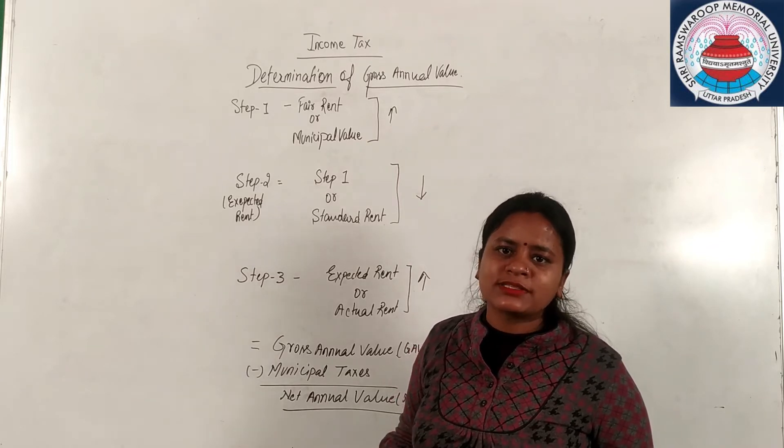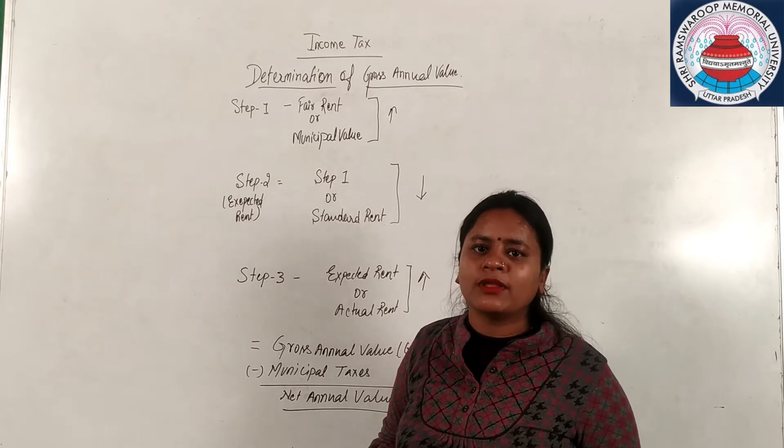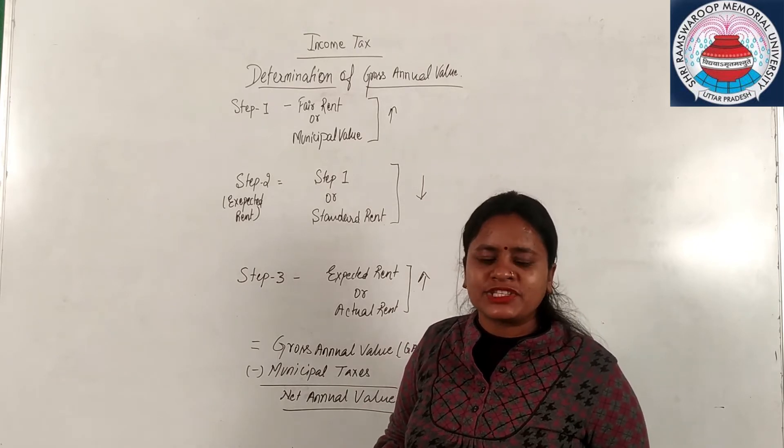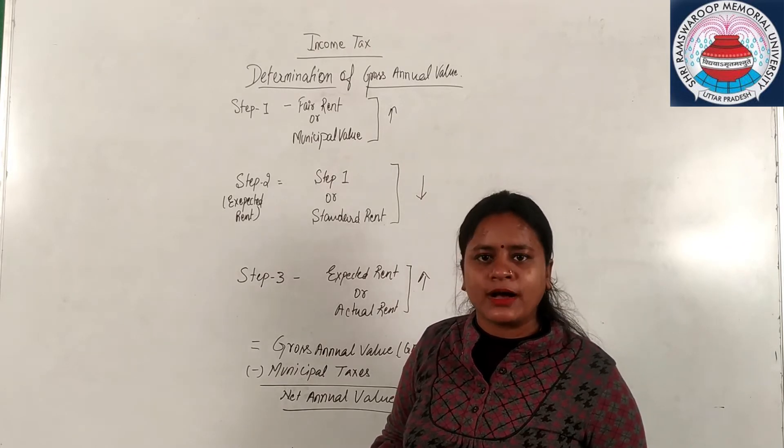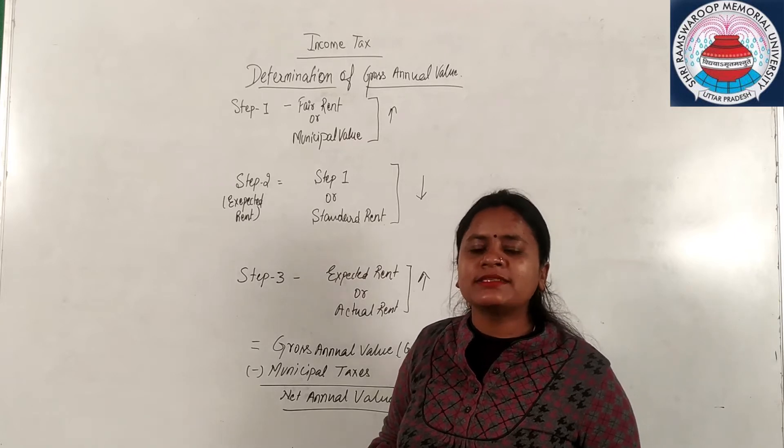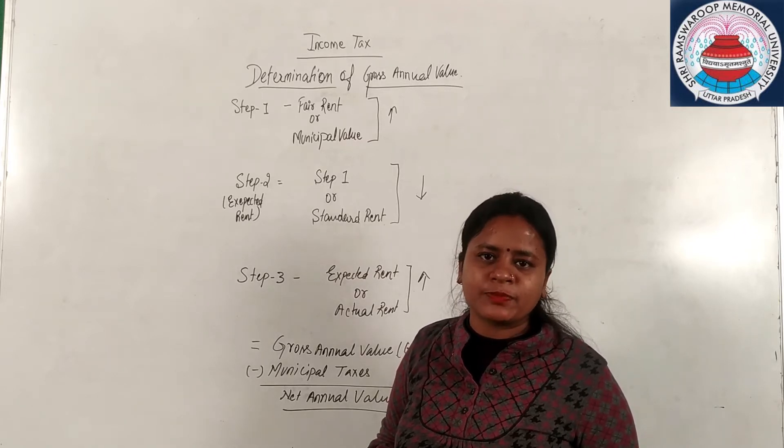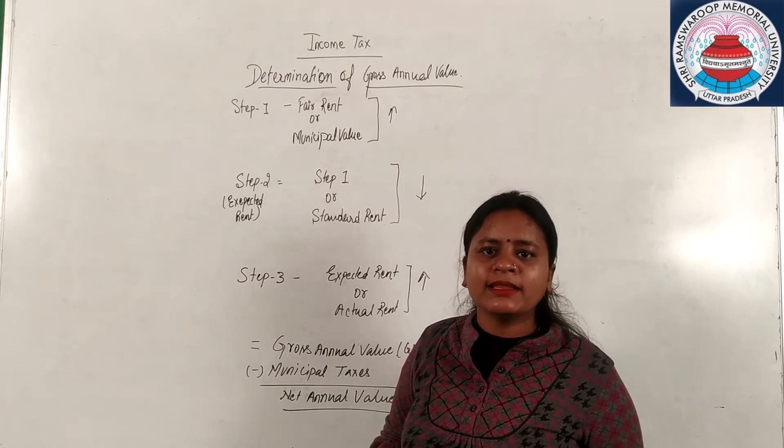Before going towards the house property, I would like to explain the five sources of income tax 1961 which is income from salaries, income from house properties, income from PGBP that is profit and gains from business and professions, capital gains, and other sources.